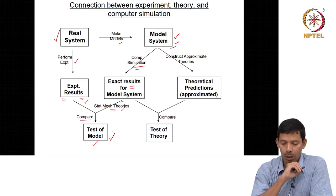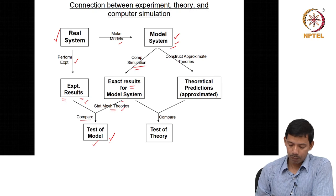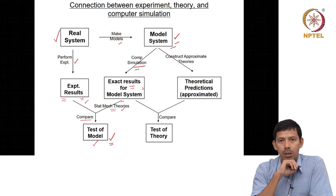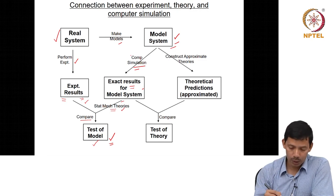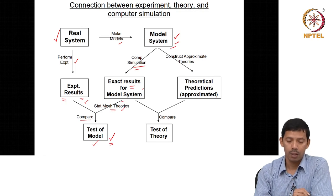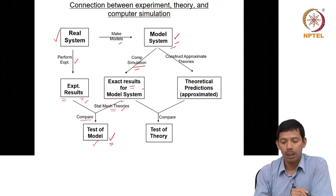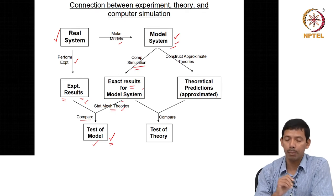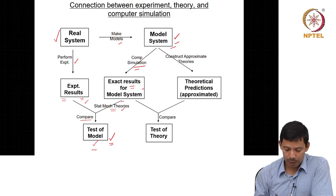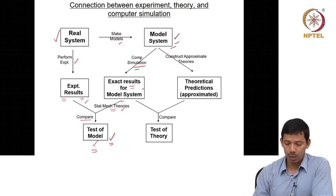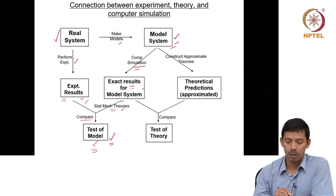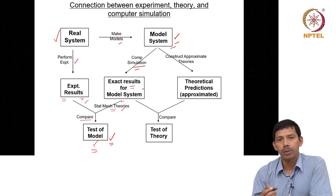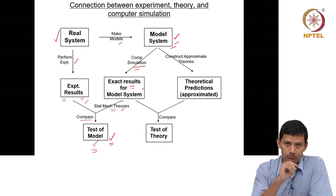That is how you make sure that your computer simulation method was robust. Once you get a good match of the quantities for which experimental data are available, you know that your simulation protocol and your models are good. Once you have that confidence, you can go deeper and obtain more information about the system which is otherwise difficult to obtain experimentally.